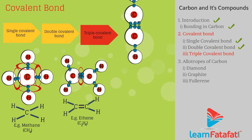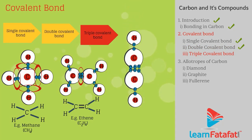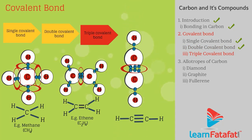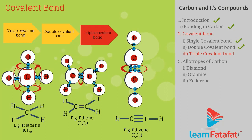Triple covalent bond: The covalent bond formed by sharing of 6 electrons between the atoms is called a triple covalent bond. The bond formed in the ethyne molecule is an example of a triple covalent bond.